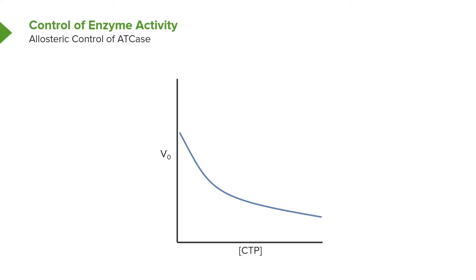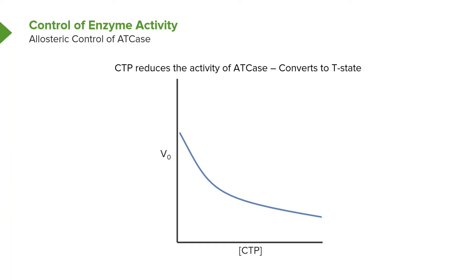The activity of ATCase is affected by a third compound: the nucleotide CTP, or cytidine triphosphate. The more cytidine triphosphate is added, the lower the velocity of the enzymatic reaction catalyzed by ATCase. CTP is the end product of the pathway initiated by the ATCase reaction. If the cell is making too much CTP, it starts to bind to the enzyme and turns it into the T state, making the enzyme less able to bind to substrate. Increasing quantities of CTP make this happen.